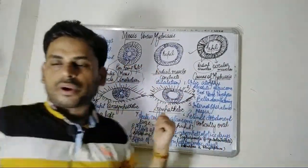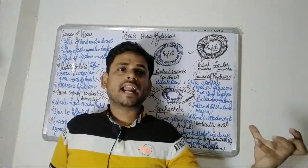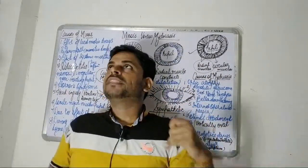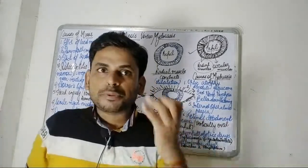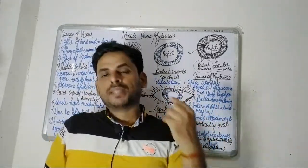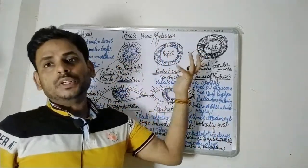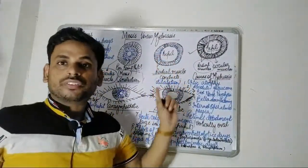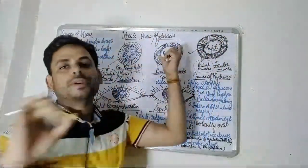Mydriasis means where there is inadequate illumination or insufficient light. As observed when electricity goes off at night, since there is no light, the pupils enlarge to permit whatever light is available in the surroundings to enter. In mydriasis, it is the radial muscles that constrict, ultimately causing enlargement of the size of the pupil.